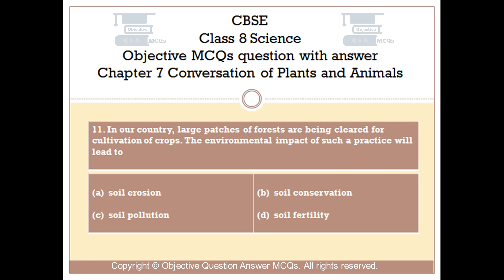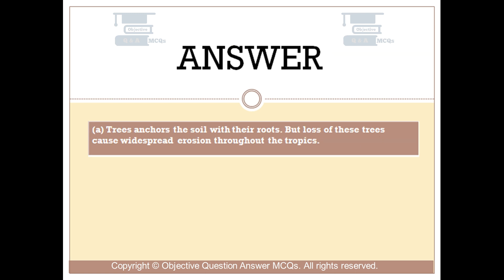Question 11. In our country, large patches of forests are being cleared for cultivation of crops. The environmental impact of such a practice will lead to: Option A, soil erosion. Option B, soil conservation. Option C, soil pollution. Option D, soil fertility. The right answer is option A. Trees anchor the soil with their roots, but loss of these trees causes widespread erosion throughout the tropics.